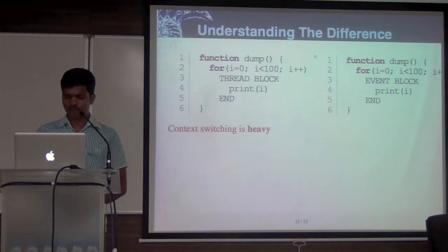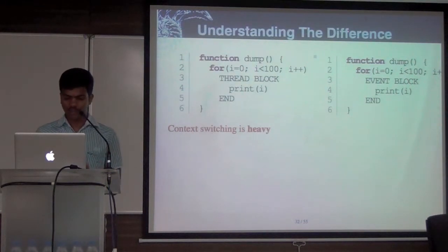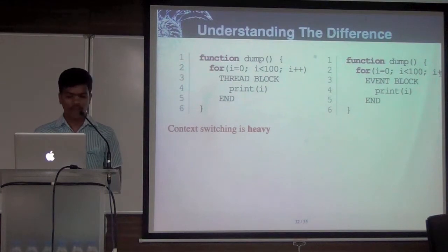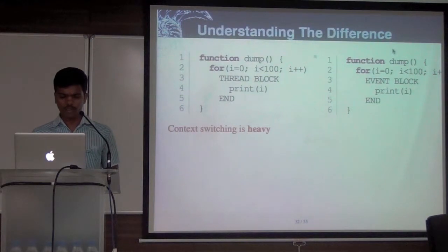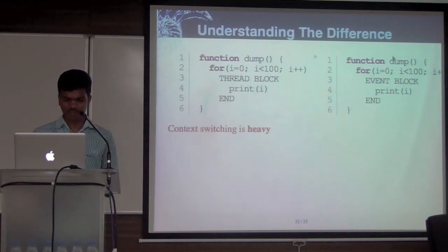There is another problem with threading. Each and every thread will have infinite copies of local variables. So whenever context switching happens — the processor switches context from one thread to another — at that time it's going to pull in all the local variables from the stack and then spawn a new thread. That context switching is heavy.